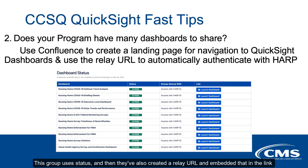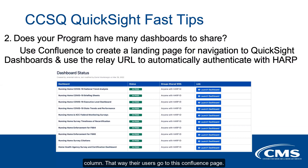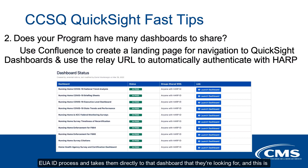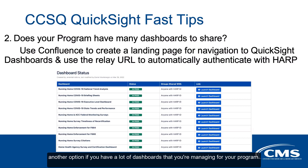This group uses a status column, and they've also created a relay URL and embedded that in the link column. That way their users go to this Confluence page, click 'launch dashboard', and it automatically authenticates them through HAARP or the EUA ID process, and takes them directly to that dashboard they're looking for. This is another option if you have a lot of dashboards that you're managing for your program.